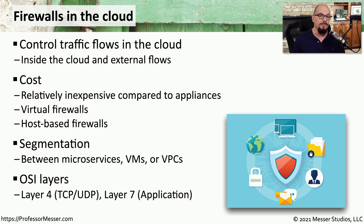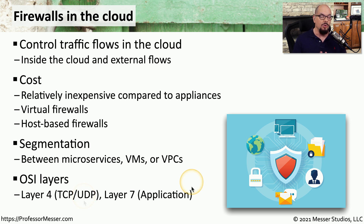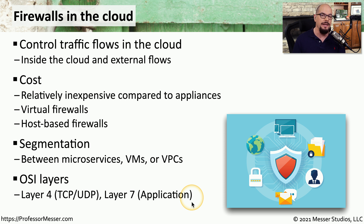We may simply want to provide simple filtering of traffic based on an IP address or port number, which provides Layer 4 or TCP/UDP type controls. Our more modern firewalls can provide visibility up to Layer 7, which means viewing exactly what type of application is flowing through the network regardless of what port number or IP address is in use. This means we could set security policies that allow certain individuals on a certain network to use certain applications, while preventing any other type of communication to that service.